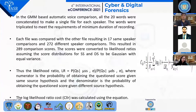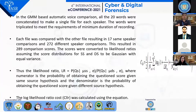The likelihood ratio was calculated using the given formula, where the numerator is the probability of obtaining the questioned score given the same-source hypothesis. Using this formula, the log likelihood ratio cost (CLLR) was also calculated.